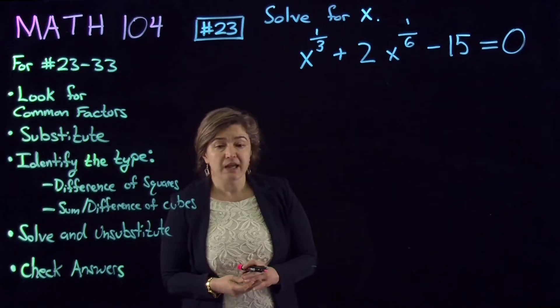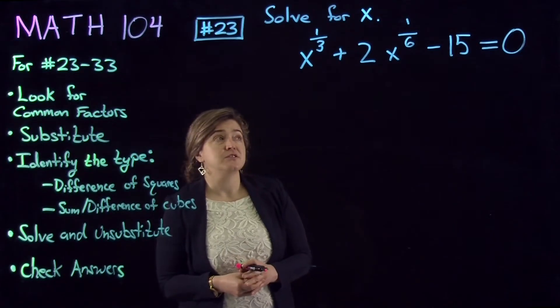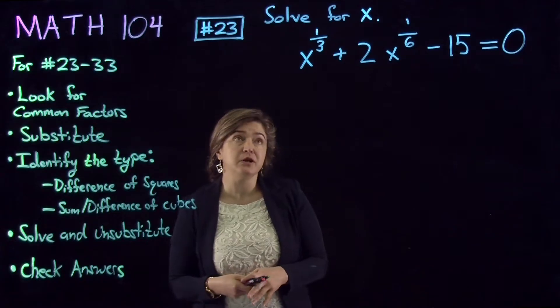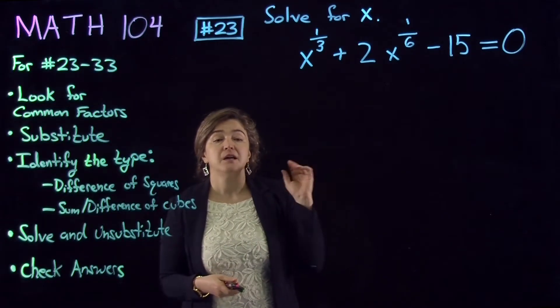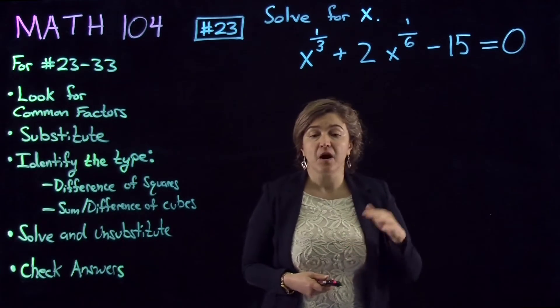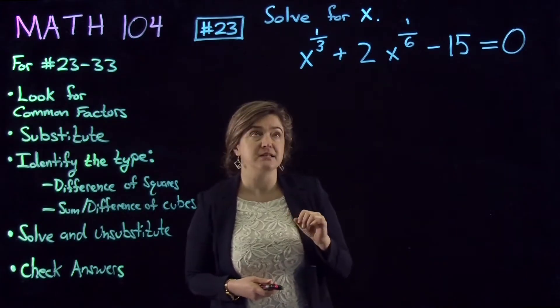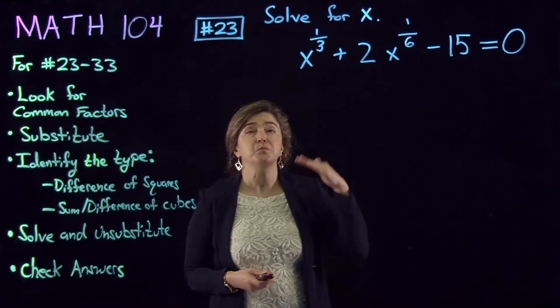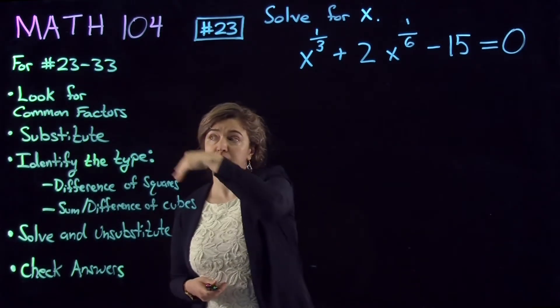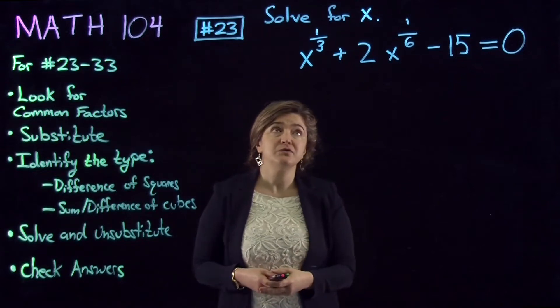First thing to check is if there are any common factors that you can see easily. Factor those out. In here, I don't see any common factor that I can factor easily. So, I move on to the second bullet point here, and I try to substitute.